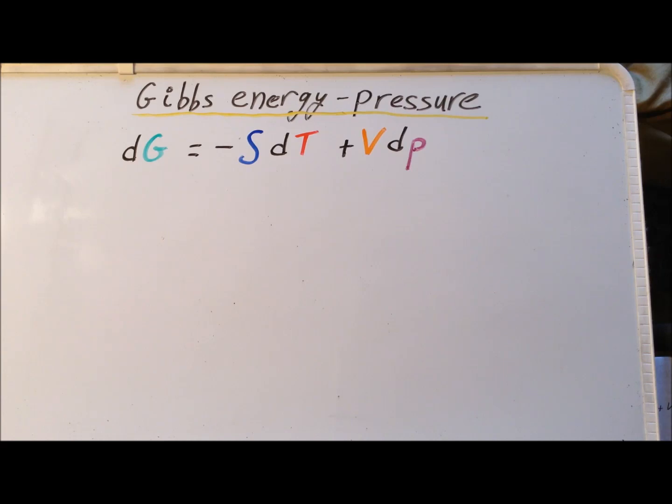Recall that the differential of G, the Gibbs energy, dG, is equal to minus the entropy S, dT, where T is the temperature, plus the volume, times dP, where P is the pressure.